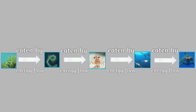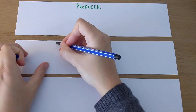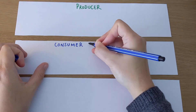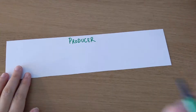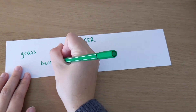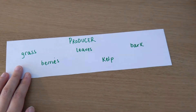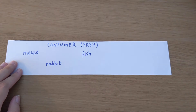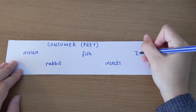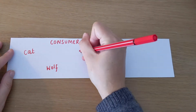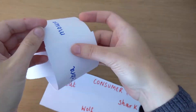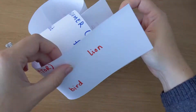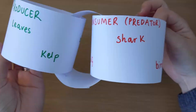Another great way to show food chains is by making a paper chain. For a simple food chain, cut out three lengths of paper and on each one write producer, consumer or prey, and consumer or predator. Then write as many examples as you can think of on each chain and stick them together, starting with producer, then prey and then predator. Be careful though — some animals can be both prey and predators.